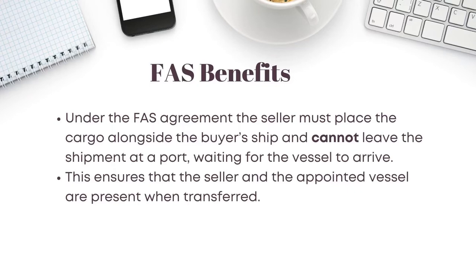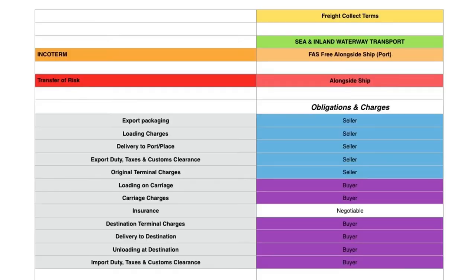As you can see in the table, the seller's obligations and charges include: export packaging, loading charges, delivery to port or place — and importantly, the seller cannot leave the goods at the port, they must deliver the goods alongside the buyer's vessel using a barge. The seller is also responsible for export duty, taxes, customs clearance, and the origin terminal charges.